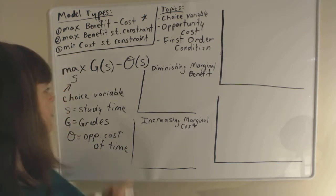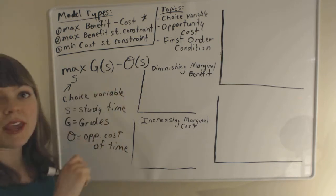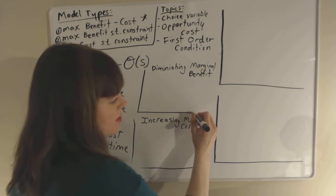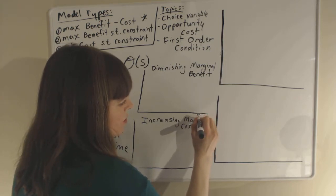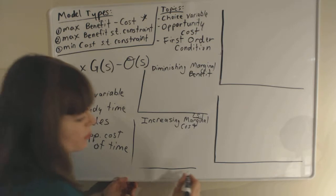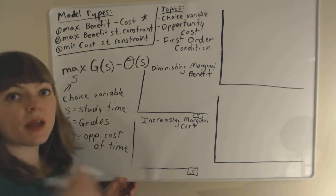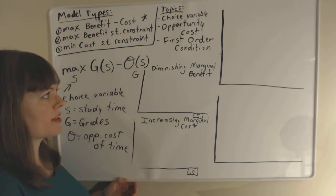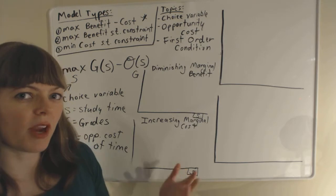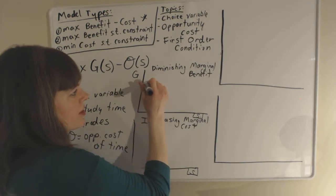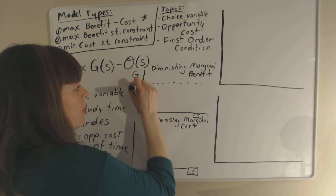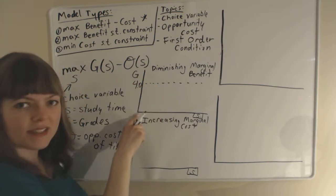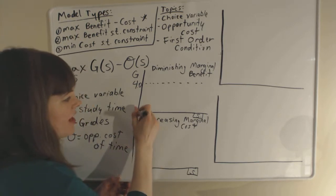First, we're going to graph the student's grades as a function of time spent studying. When you graph these, you always put the choice variable on the x-axis — so time spent studying goes on the x-axis for both the benefit and cost graphs. Grades go on the y-axis. We know there's a maximum grade, so let's use a 4.0 scale. The maximum is an A, a 4.0, and if we don't study at all, we start at zero.